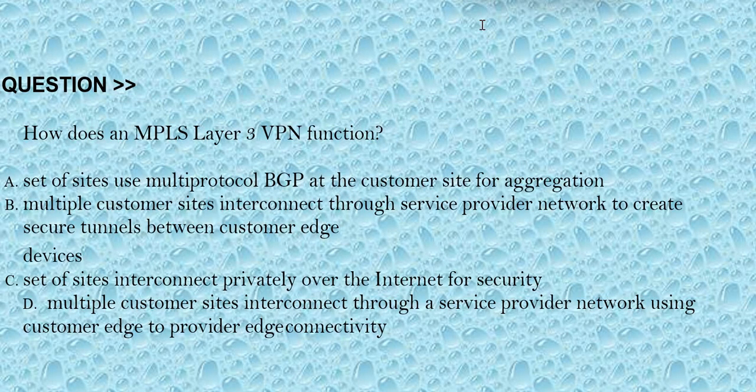Our next question is: how does an MPLS Layer 3 VPN function? Option A: uses multi-protocol BGP at the customer site for aggregation. Option B: multiple customer sites interconnect through a service provider network to create secure tunnels between customer edge devices. Option C: a set of sites interconnect privately over the internet for security. Option D: multiple customer sites interconnect through a service provider network using customer edge to provider edge connectivity. The correct answer is option D.